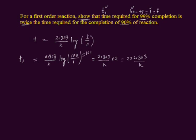The next part of the question says this is twice the time required for the completion of 90 percent of the reaction. For 90 percent completion, we consider the time required is t2. Since the reaction completes 90 percent, the remaining amount will be 100 minus 90, which equals 10. The final amount is 10 and the initial amount is 100. Applying the formula: t2 is equal to 2.303 divided by k multiplied by log of 100 over 10, which simplifies to log of 10.